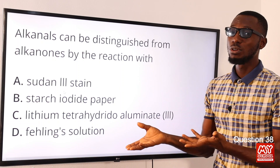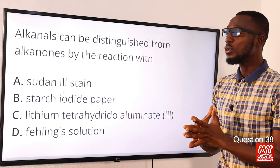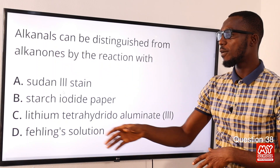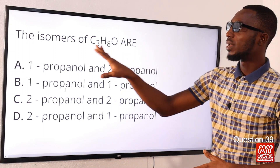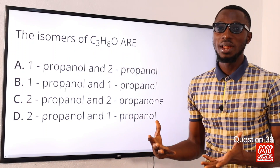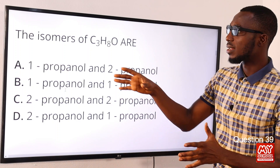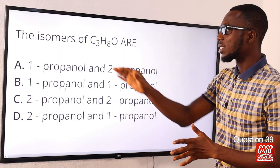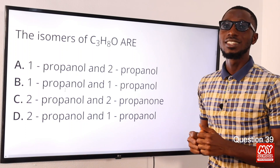Question 38: Alkanals can be distinguished from alkanols by reaction with Fehling's solution and Tollens' reagent — these are mild oxidizing agents that reveal the reducing property of alkanals. The correct option is option D for Fehling's solution. Question 39: The isomers of propanol are what? For alkanols to experience isomerism they must have at least three carbon atoms. The isomers of propanol are 1-propanol and 2-propanol, so option A is the correct option.